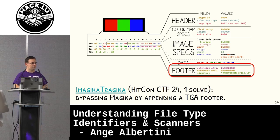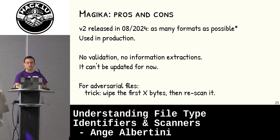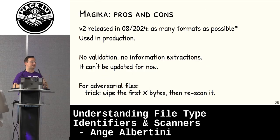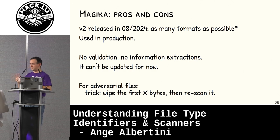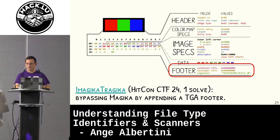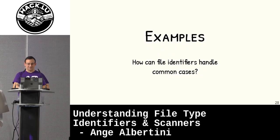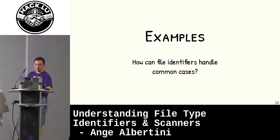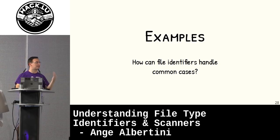Magika V1 was very experimental. It works and it's useful. For V2, we really tried to add as many file formats as possible that we could find easily. Right now it's in the scale of hundreds of file formats — binary and source files. Let's look at a few standard examples of common cases of stuff you want to identify, and we will see that some engines cannot correctly work on those.